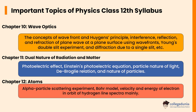In Chapter 11, Dual Nature of Radiation and Matter, important topics are the Photoelectric Effect, Einstein's Photoelectric Equation, particle nature of light, de Broglie relation, and nature of particles.